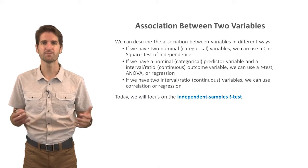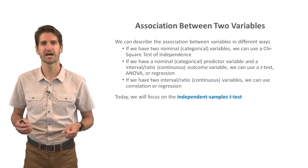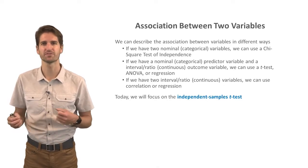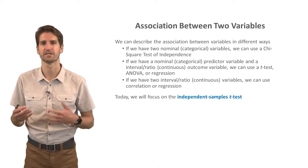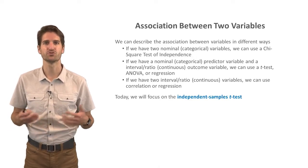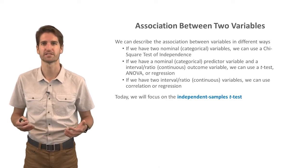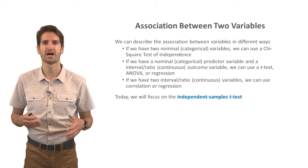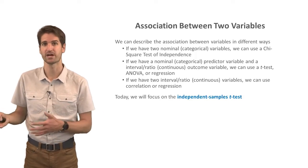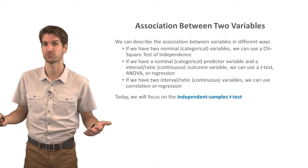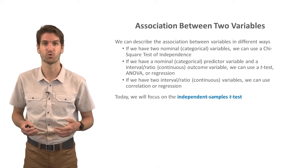An independent samples t-test is just one way we can describe the association between two variables. The type of statistical test we use depends on the measurement scales of the involved variables. For two nominal or categorical variables, we can use a chi-square test of independence. Or if we have a nominal predictor variable and an interval, ratio, or continuous outcome variable, we can use an independent samples t-test, a one-way analysis of variance, or a regression model.